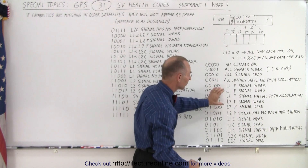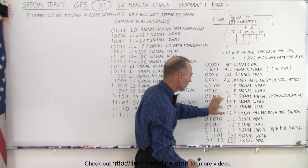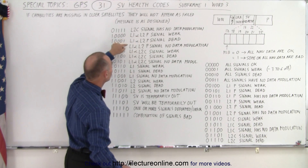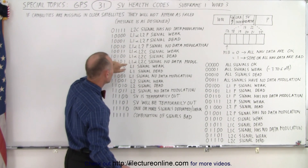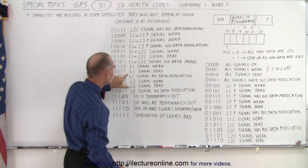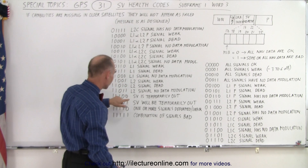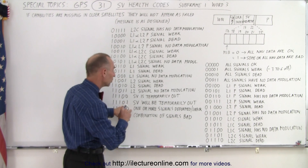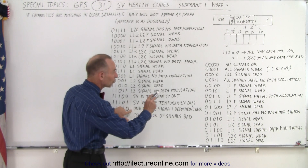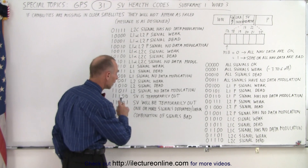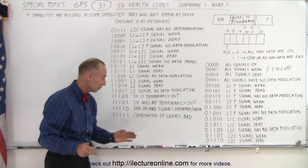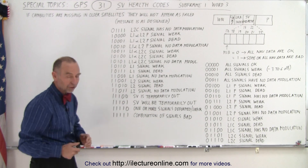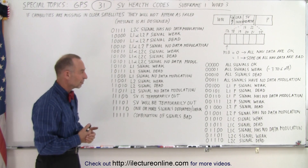This pattern keeps repeating, going from L1P to L2P to L1C to L2C, then L1 and L2P, L1 and L2C, L1 by itself, and L2 by itself. Then the last 4 codes indicate: SV is temporarily out, SV will be temporarily out, one or more signals are deformed but the URA is okay, and a combination of signals are bad. The all-1s code is the catch-all, meaning you have a bunch of signals that are bad and you won't get good data from those SVs.